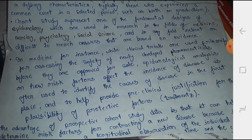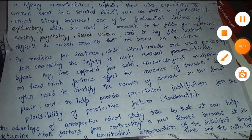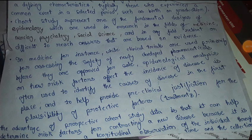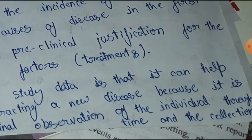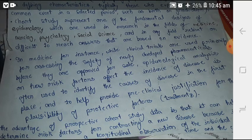These are all important points in cohort study — note them down in your notebook and read them to understand easily. The advantage of prospective cohort study data is that it can help determine risk factors for contracting a new disease, because it involves longitudinal observation of individuals through time and collection of data at regular intervals. Every interval is a data collection point in cohort study, so recall error is reduced. Cohort studies are a type of medical research which investigate the causes of disease and establish links between risk factors and health outcomes.